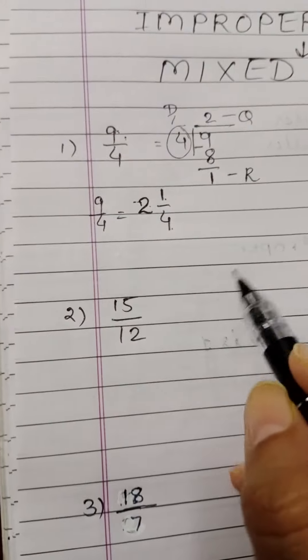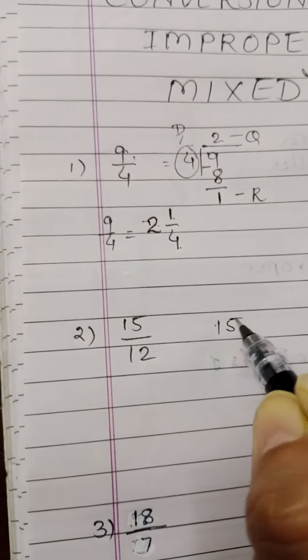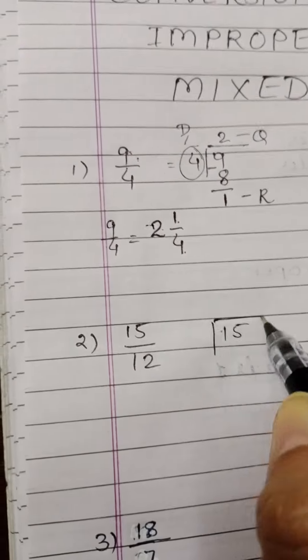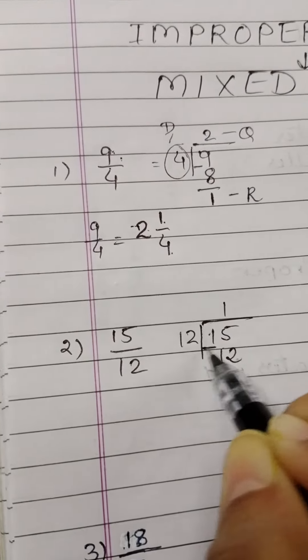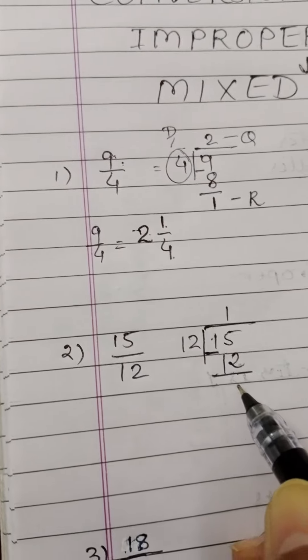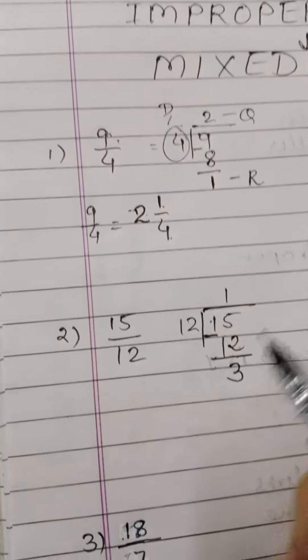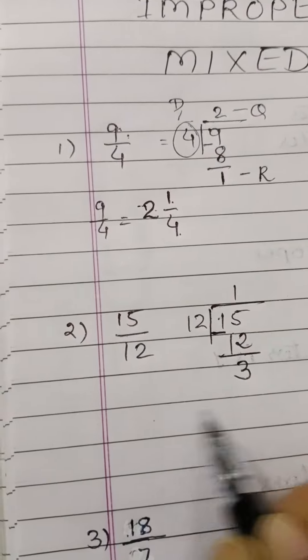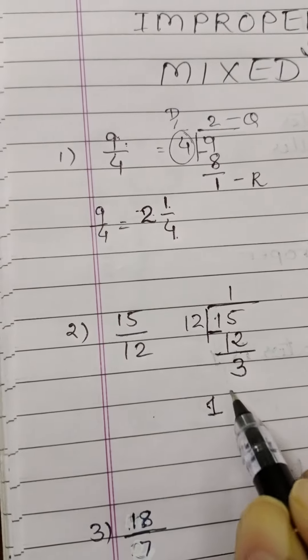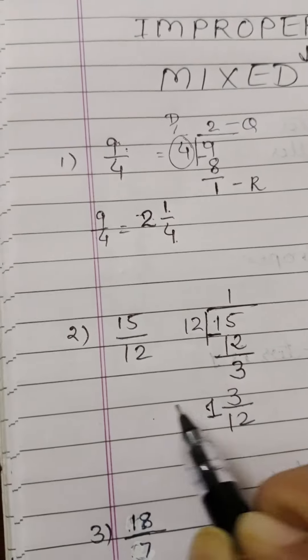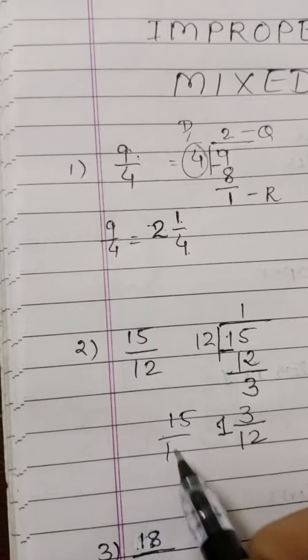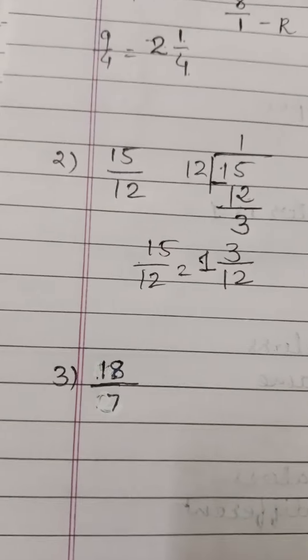15 upon 12, another example. So you will take 15 divided by 12. So 12, 1's are 12. Here 15 minus 12 is 3. So this is written as 1 whole 3 upon 12. So basically 15 upon 12 is written as 1 integer 3 upon 12.